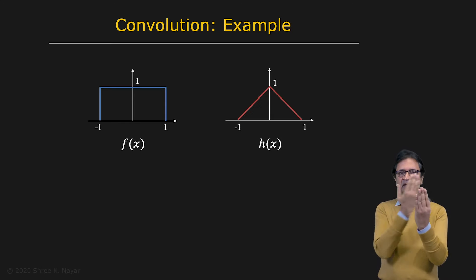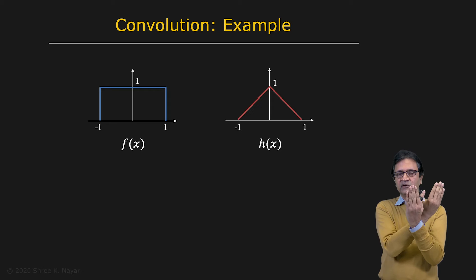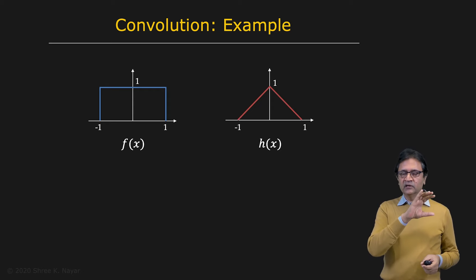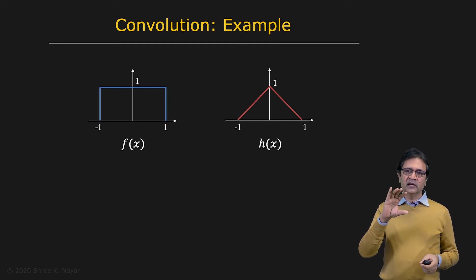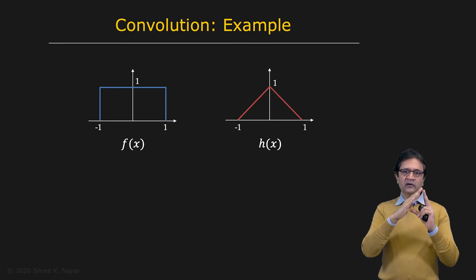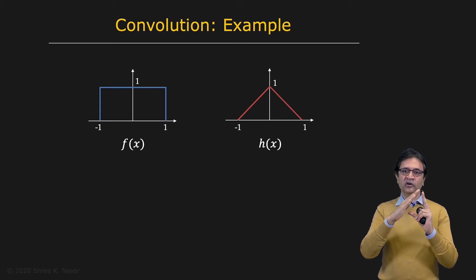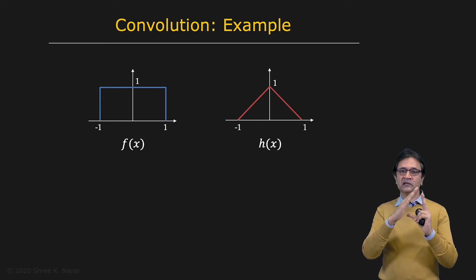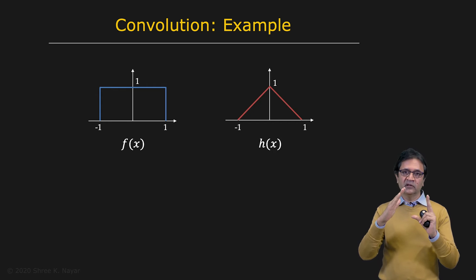As the triangle slides over the rectangle, the area of the overlap region is going to increase as before. But what's happening is that the overlap region is actually a triangle itself. And both the base and the height of the triangle increase linearly with x. So actually, the area of the triangle — the overlap region — is going to be a quadratic function of x.